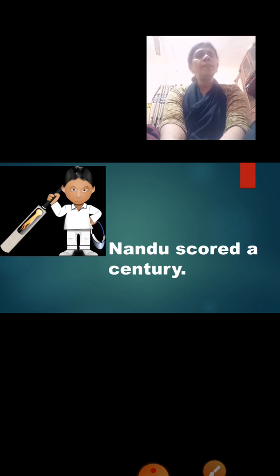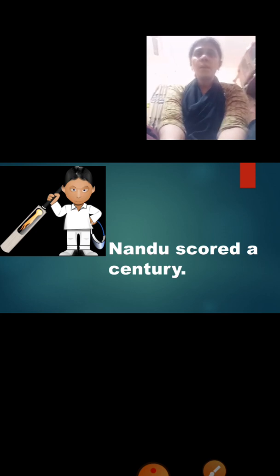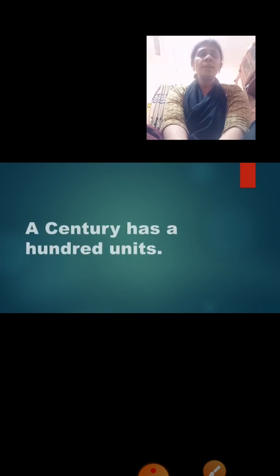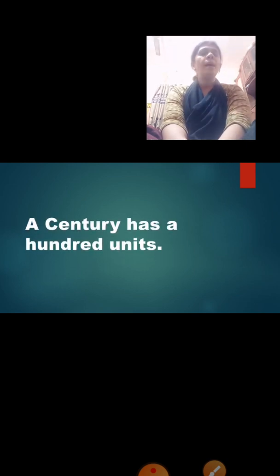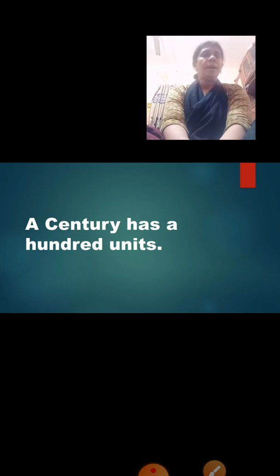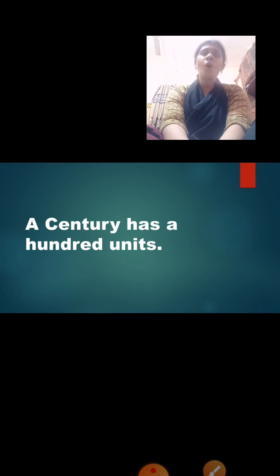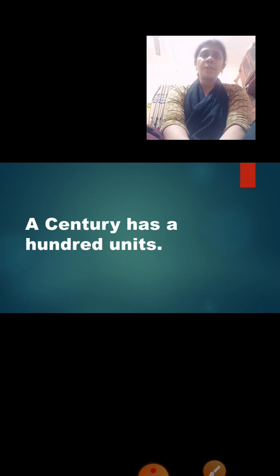Nandu scored a century. What does the word century mean? A century has 100 units. A century is also written as 100. Nandu scored a century means Nandu scored 100 ranks, or 100 scores, or 100 runs. So a century equals 100 units.